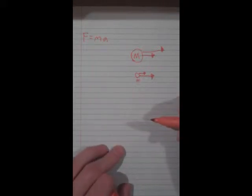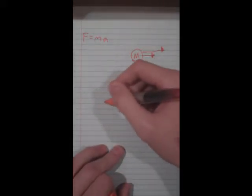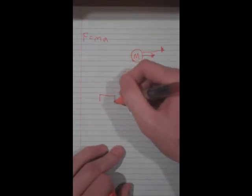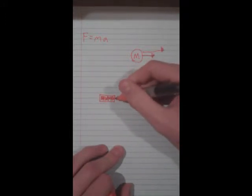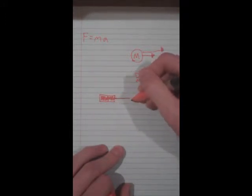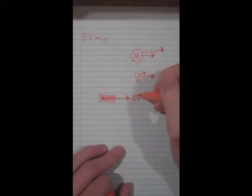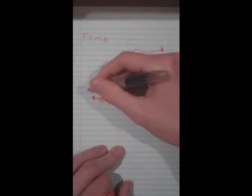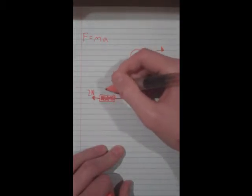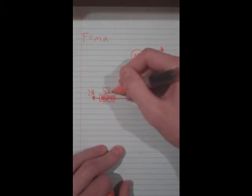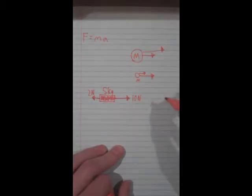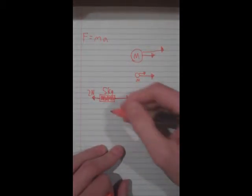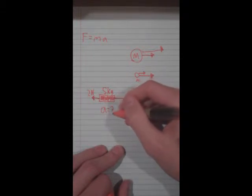Let's say we have something like a block on a string, and you are pulling it with a force of 10 newtons. So this string has a tension of 10 newtons. And there is a frictional force in the opposite direction of 2 newtons. And this thing has a mass of 5 kilograms. So we want to find its net acceleration.